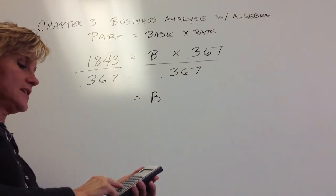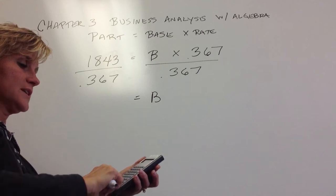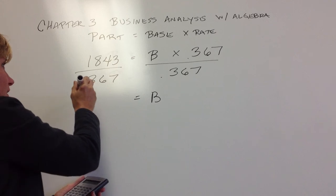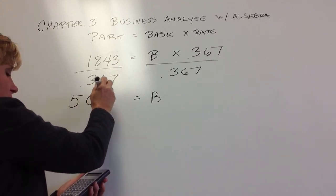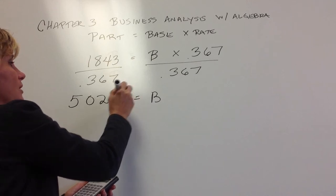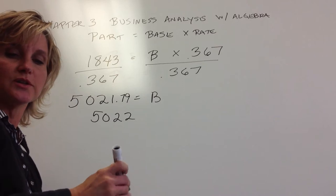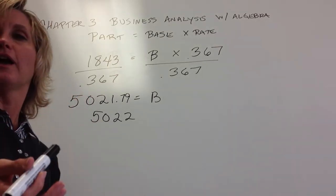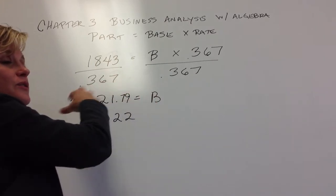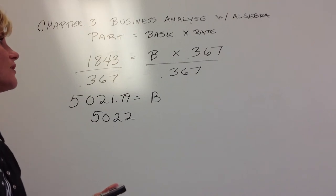So if I take 1,843 students divided by 0.367, or 36.7%, that gives me a base of 5,021, and it actually goes out .79, but we'll round that up to the nearest student. So 5,022 students. That was the total population; 1,843 have the more than $10,000 in debt.